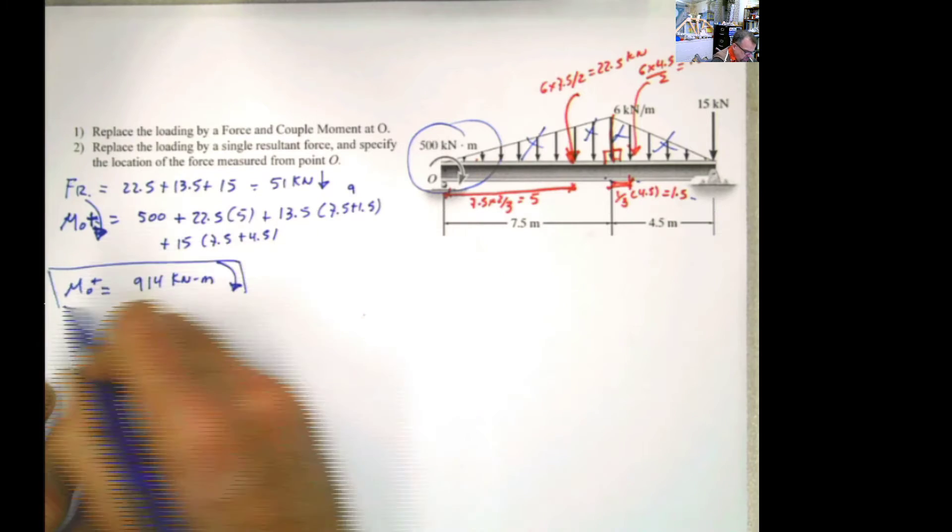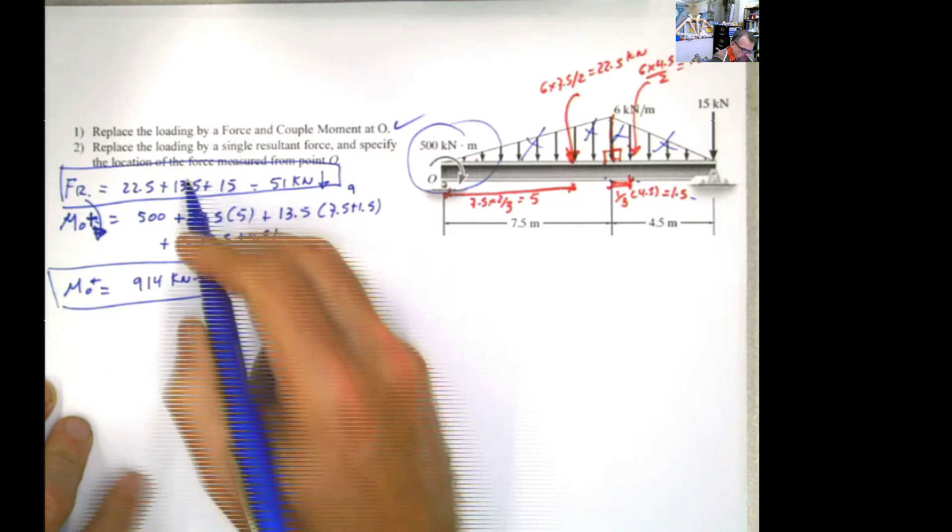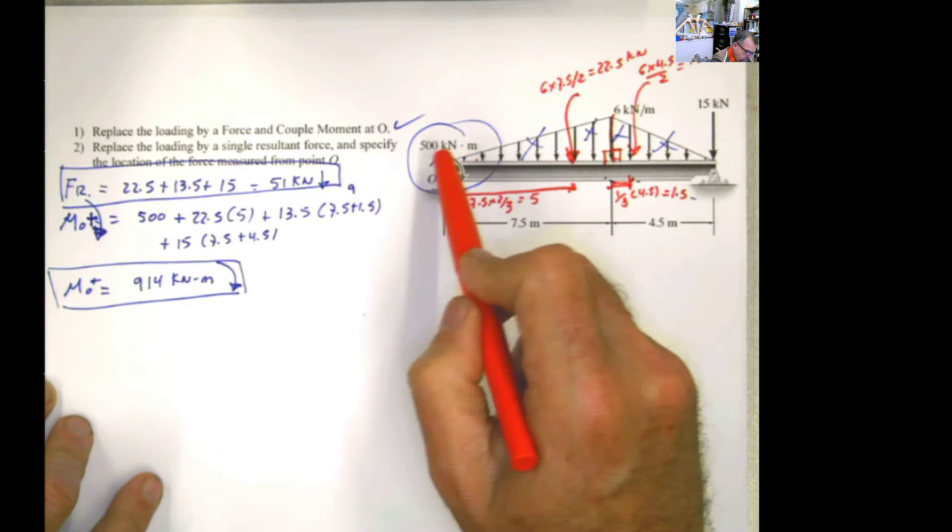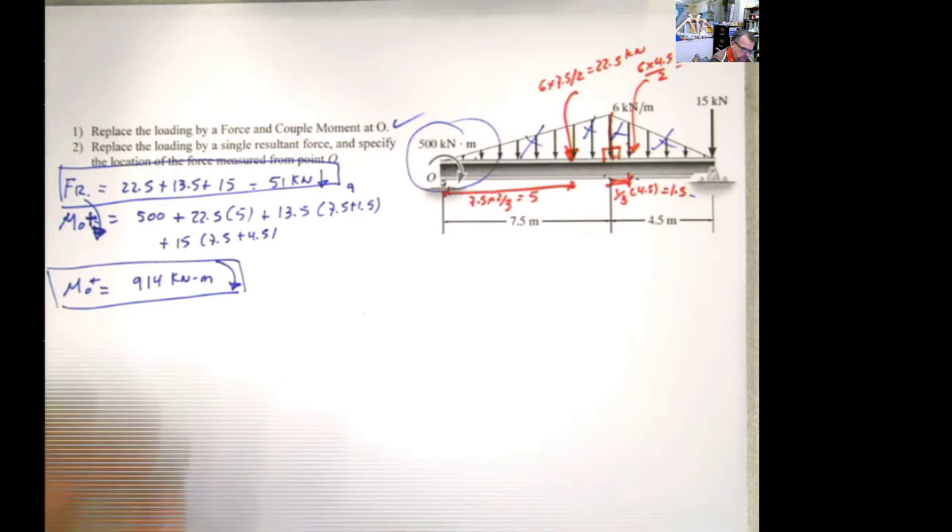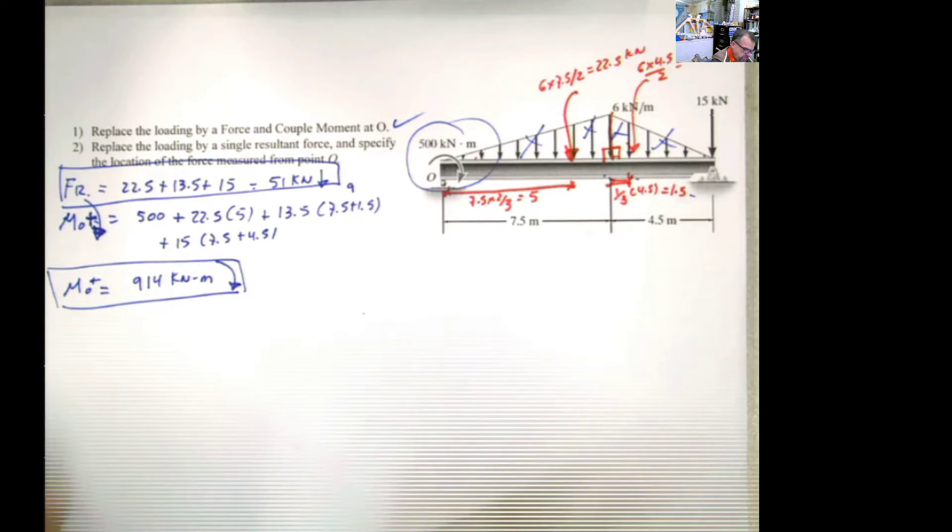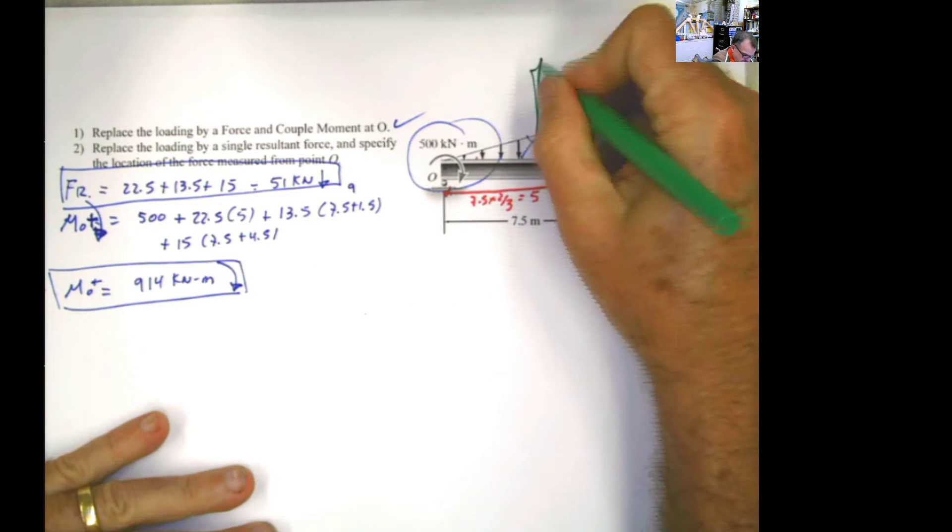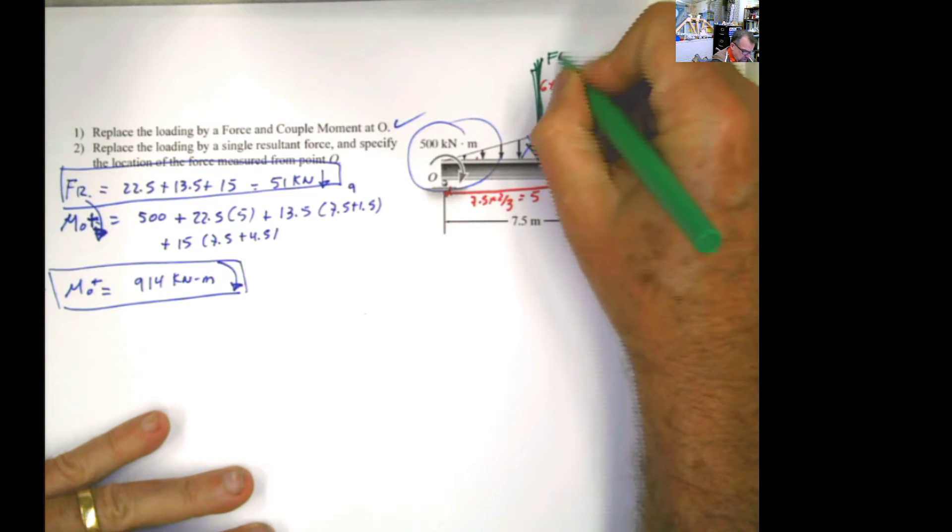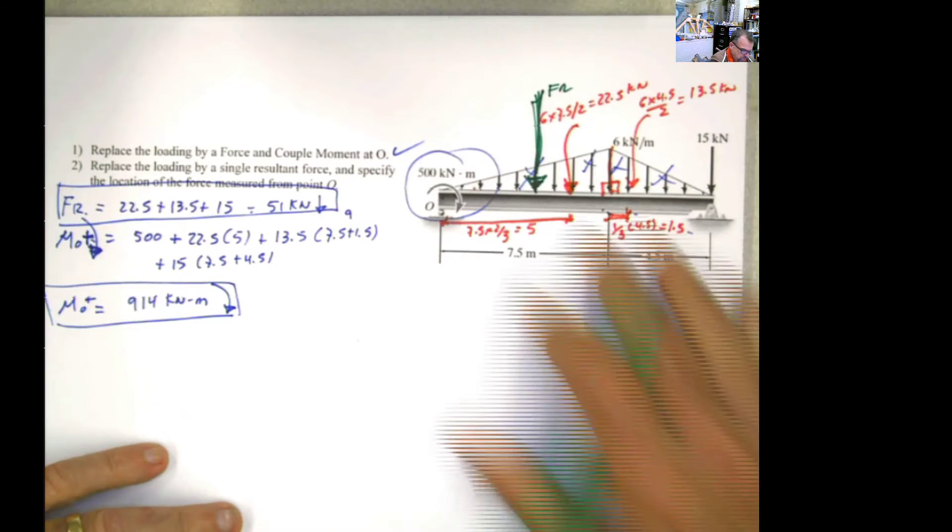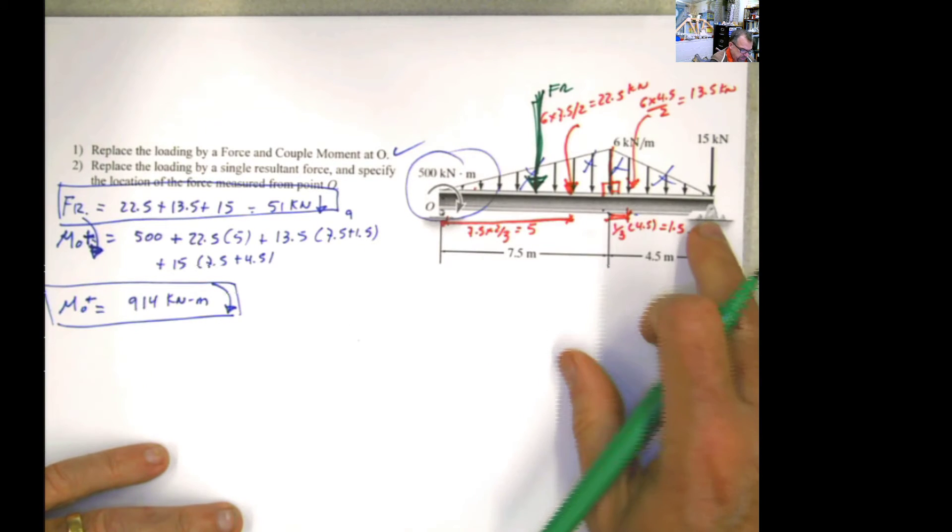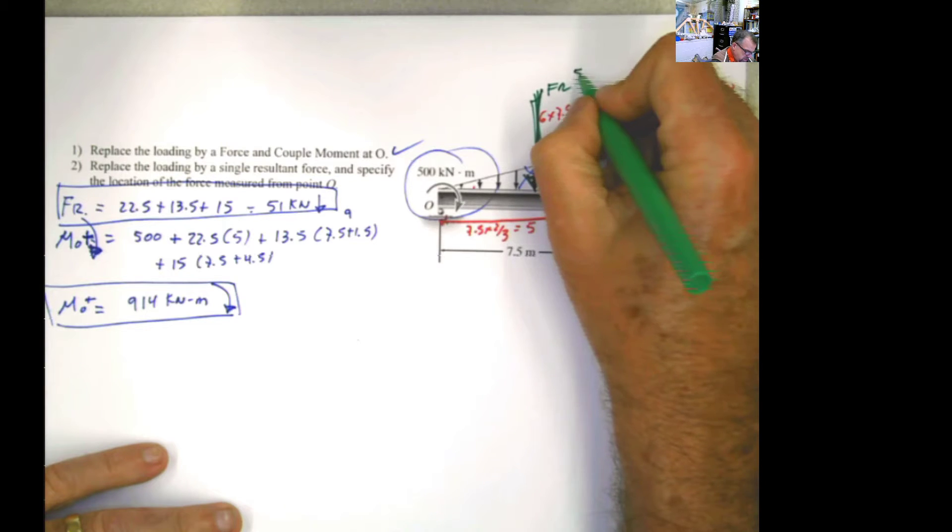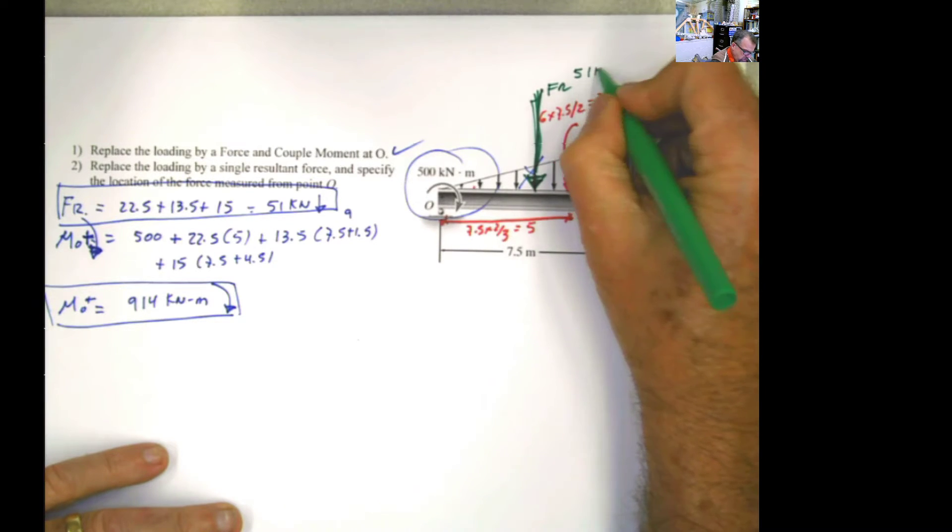Now the second question. The problem is telling you, I don't want a moment at all. I want to create a resultant force. But that resultant force is the only thing acting on this beam, and that resultant force we already know is 51 kilonewtons.